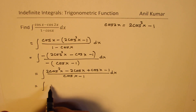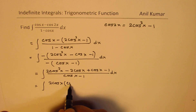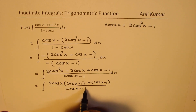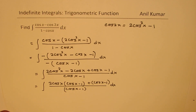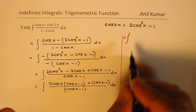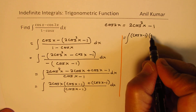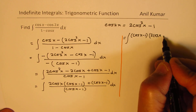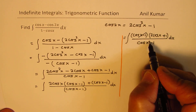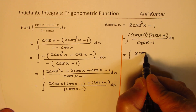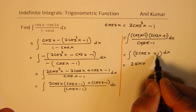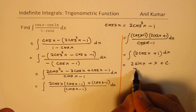Taking 2 cos x as a common factor from the first two terms and 1 from the last two, the numerator factors as (cos x minus 1)(2 cos x + 1). This gives the integral of (cos x minus 1)(2 cos x + 1) over (cos x minus 1) dx. The (cos x minus 1) terms cancel, leaving the integral of (2 cos x + 1) dx. Integrating gives 2 sin x + x plus constant c.